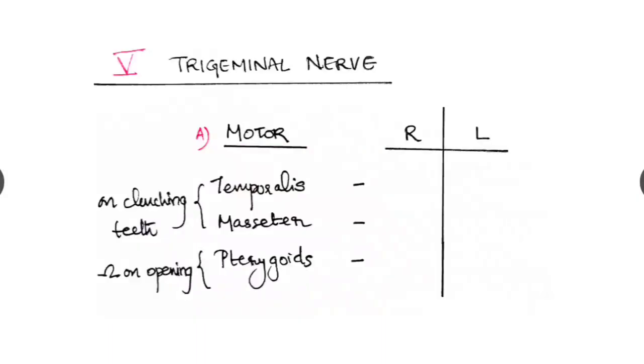And fifth one is the trigeminal nerve. We have to check its motor, sensory and the reflexes. First one, the motor part, the temporalis, masseter and pterygoids we have to check. Temporalis and masseter are checked by asking the patient to clench his teeth. Pterygoids by giving resistance to the opening of the mouth.